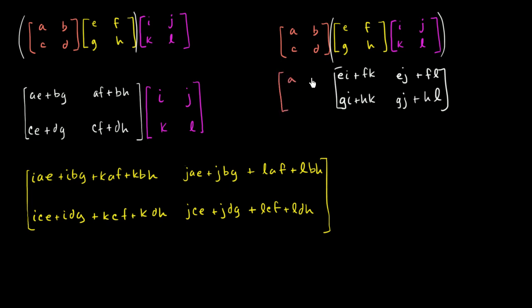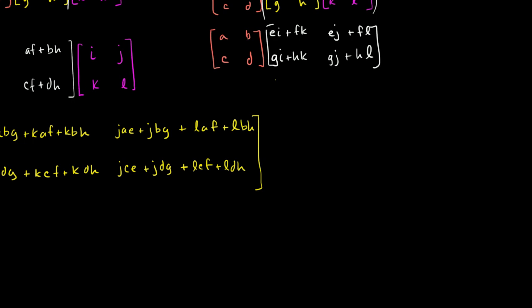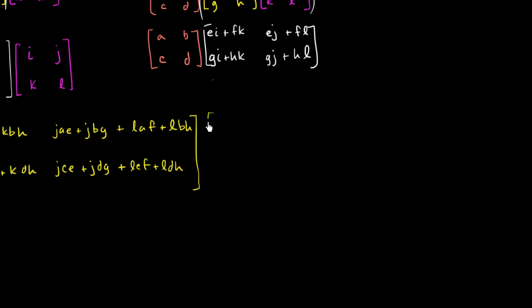And it's all going to be multiplied times ABCD. A, B, C and D. And I'm going to need some real estate to do this. So let me do it down here. I'll do it in green. So let me do a little arrow to show that this is, actually I could just, or I could just scroll over a little bit. That actually might work out better. So what am I going to get? So A times this plus B times this. So AEI plus AFK plus BGI plus BHK.